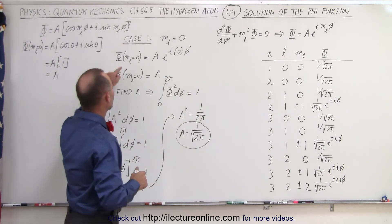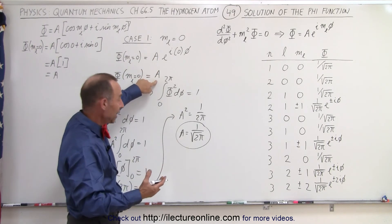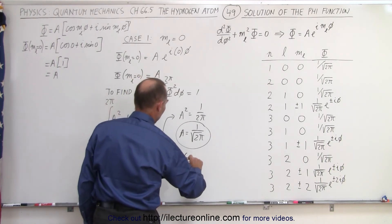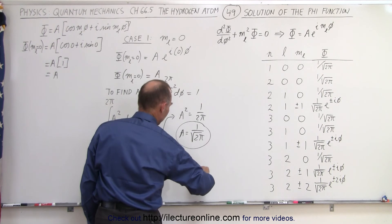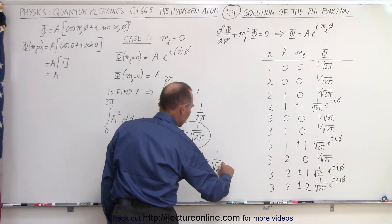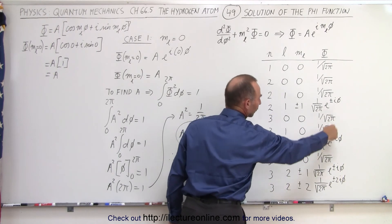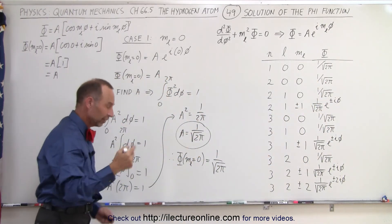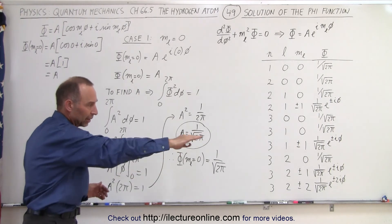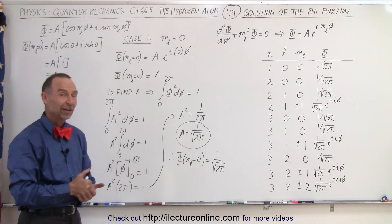Finally, the function when m sub l is equal to zero equals a, and since a is one over the square root of two pi, the phi function evaluated at m sub l equal to zero is one over the square root of two pi — which is what you see in the table. Anytime you see m sub l equal to zero, the solution for the phi function, representing rotational motion in the xy plane, will always equal one over the square root of two pi.